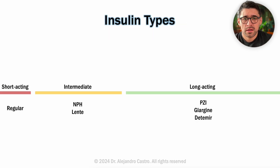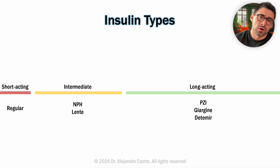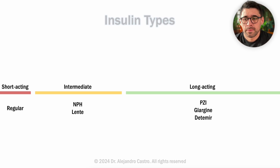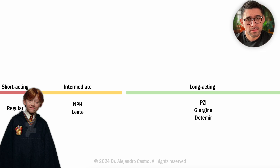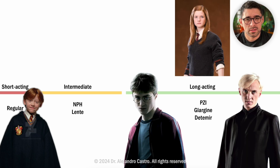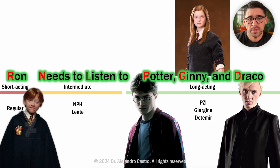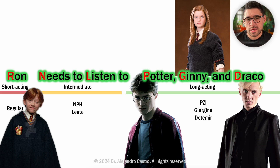Here is a graph with the types of insulin and whether they are short-acting, intermediate-acting, or long-acting. If you are a Harry Potter fan or familiar with the movies, you might find this mnemonic useful. Ron Weasley needs to listen to Potter, Genie, and Draco. Ron represents regular insulin — the short-acting. 'Needs to listen' stands for intermediate-acting insulins. And Potter, Genie, and Draco represent the long-acting insulins.